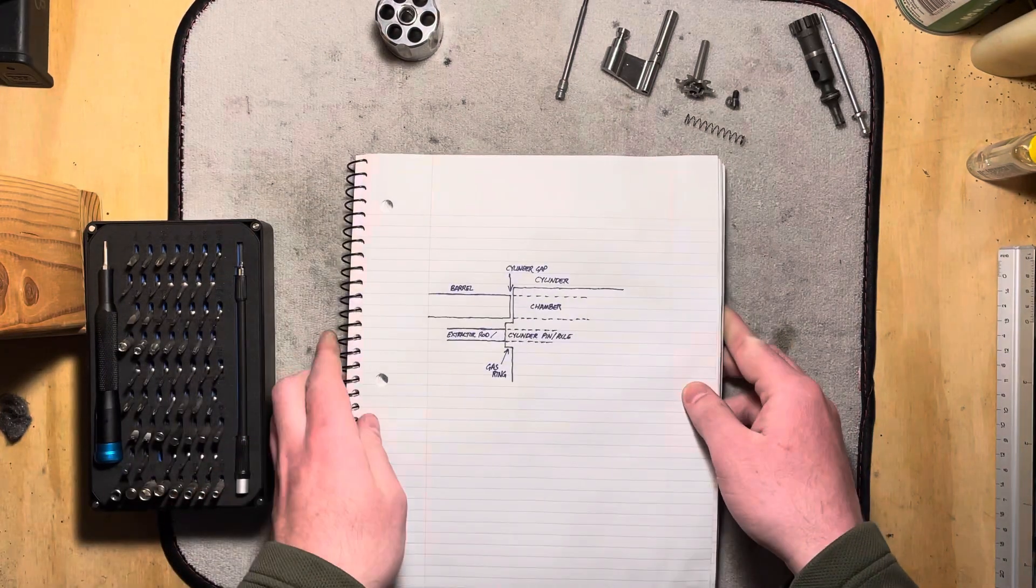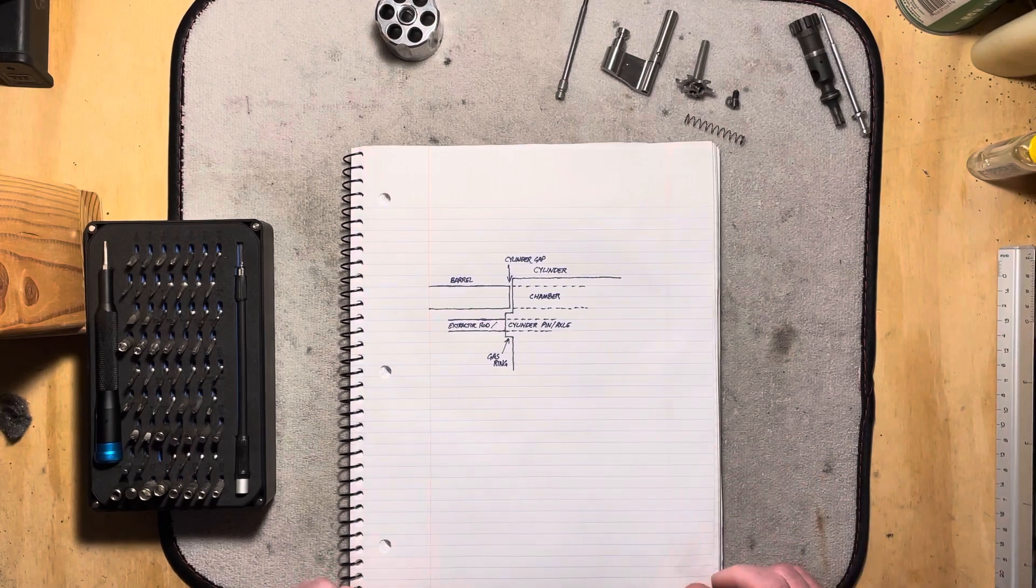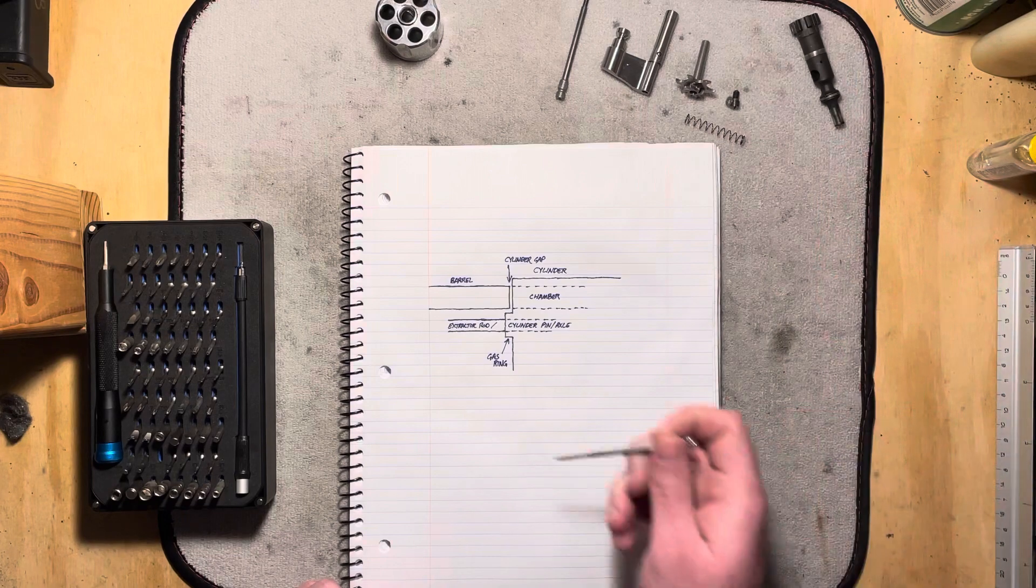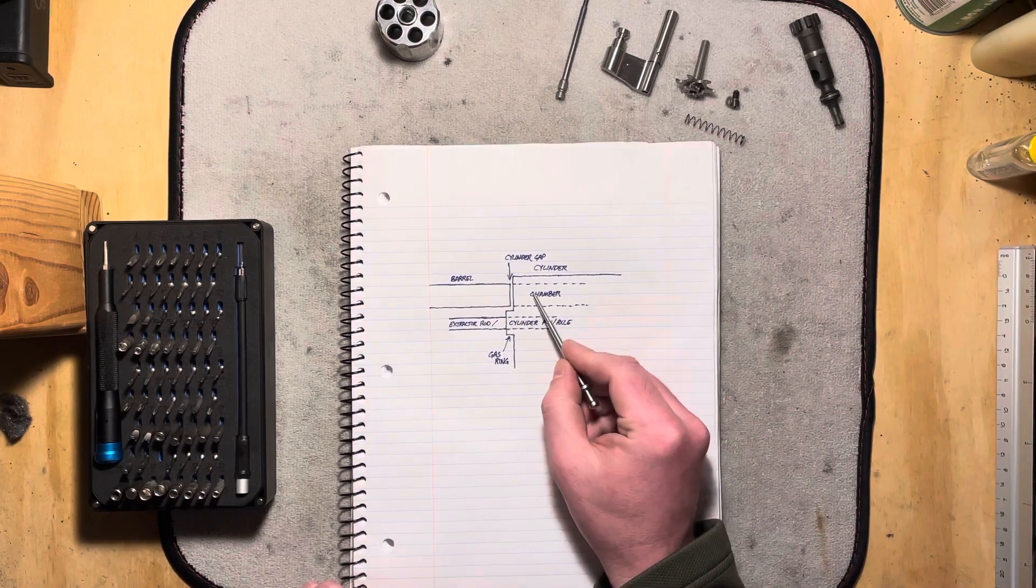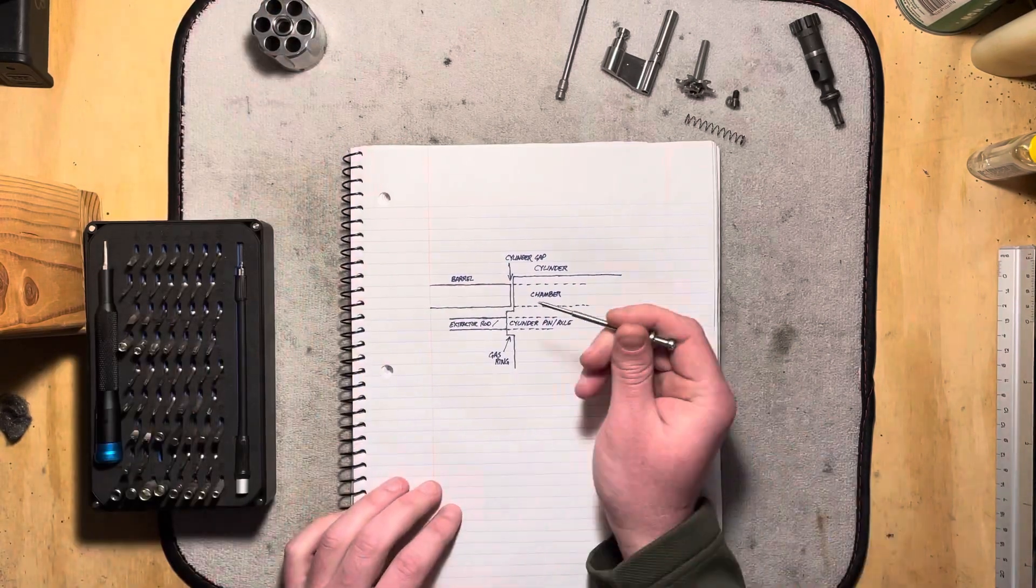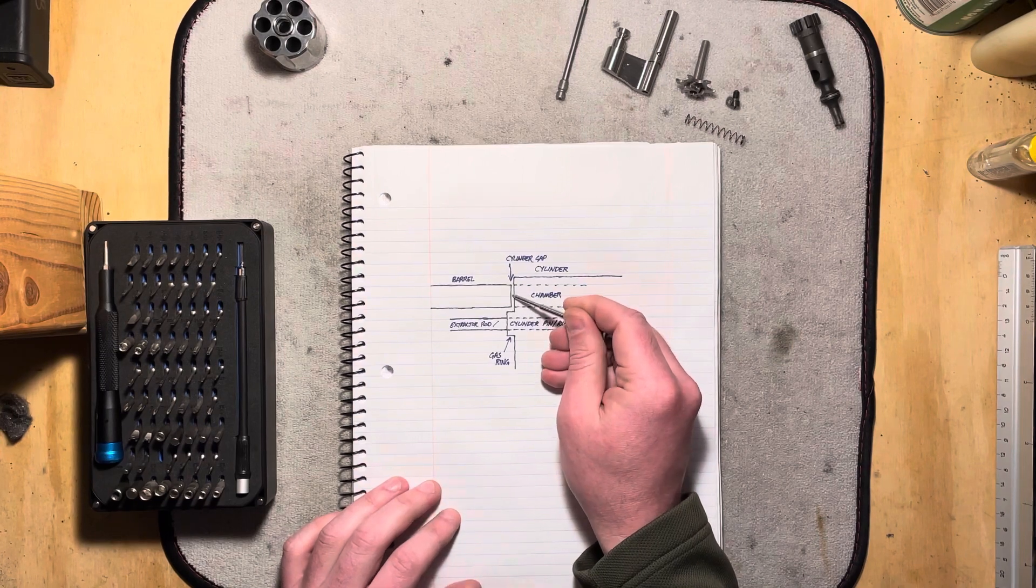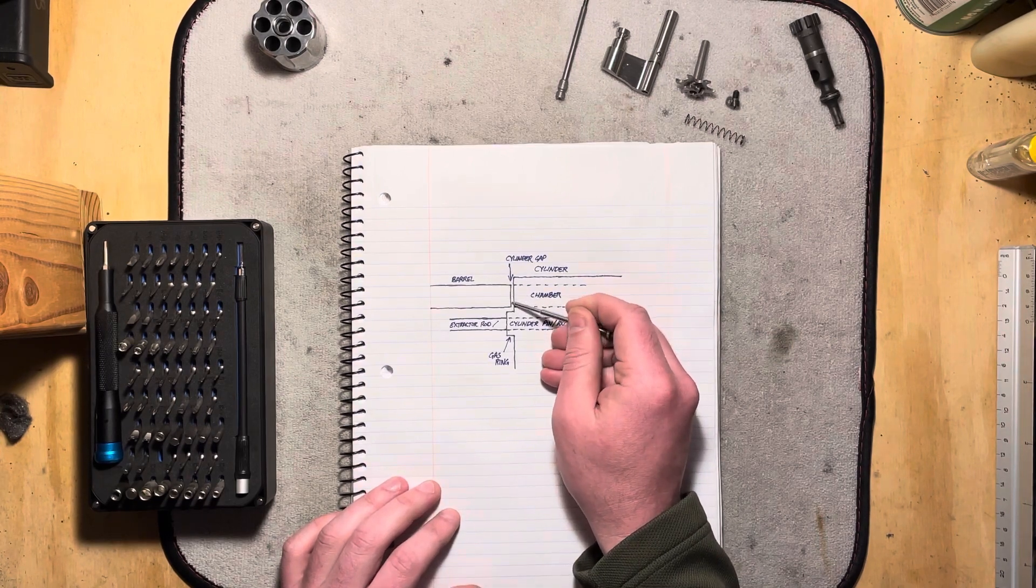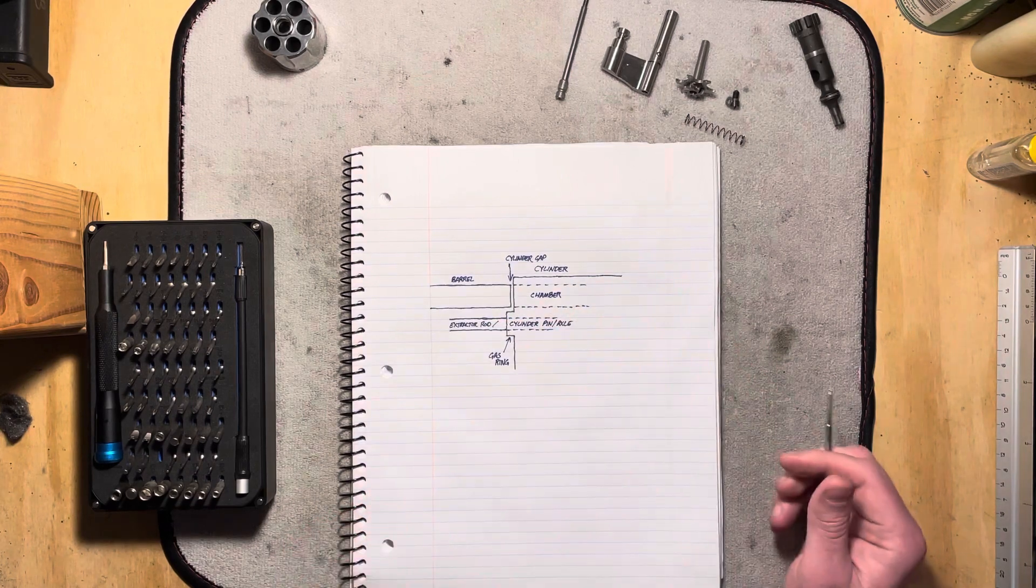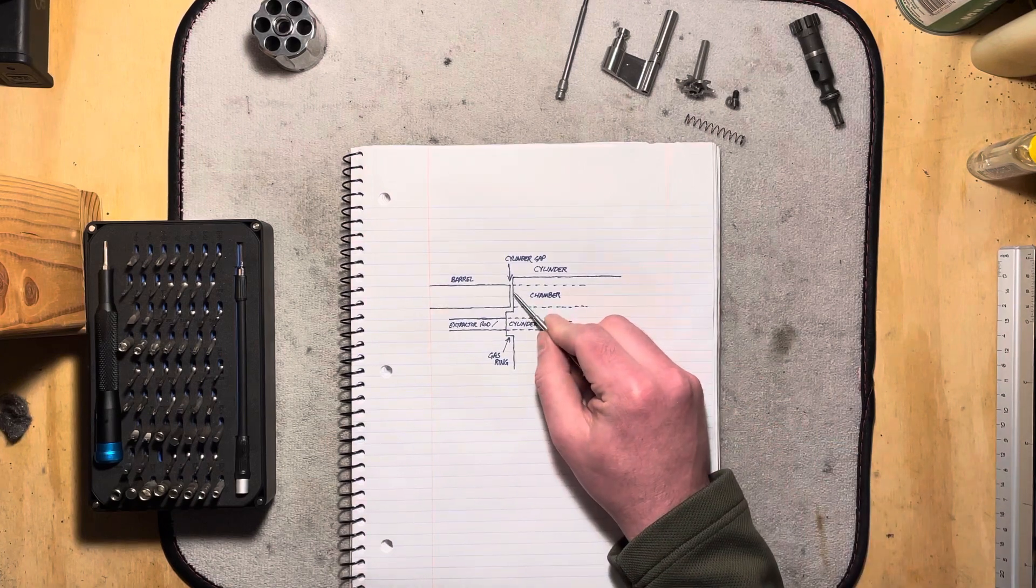I have a little drawing to explain it. The reason for the gas ring is the cylinder gap. So you have the barrel and you have the chamber in the cylinder. And between them, you have a gap, a small gap. It's a few thousandths of an inch. I forget exactly what it measures on the Python, but it's a small gap in there.